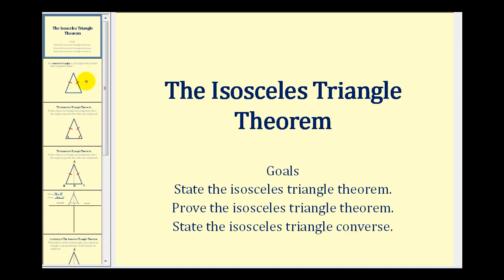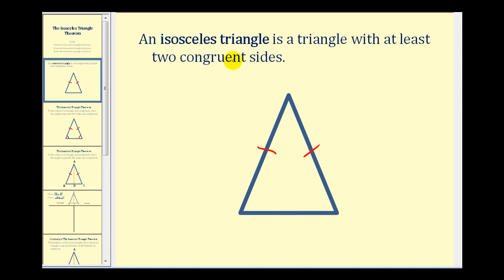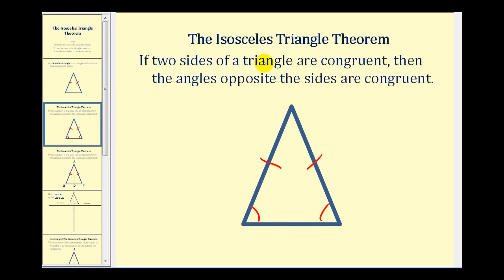Let's first define an isosceles triangle. An isosceles triangle is a triangle with at least two congruent sides, as we see here. The isosceles triangle theorem states that if two sides of a triangle are congruent, then the angles opposite the sides are congruent, as we see here.